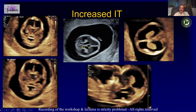We can also rarely see an increase in the size of the IT. If you look very closely in the posterior fossa you can appreciate a cystic structure — this was a case of Dandy-Walker picked up in the first trimester. So an increased IT should prompt you to look out for posterior fossa abnormalities.